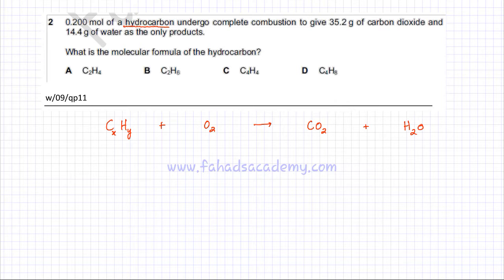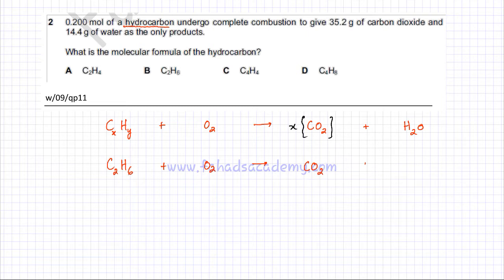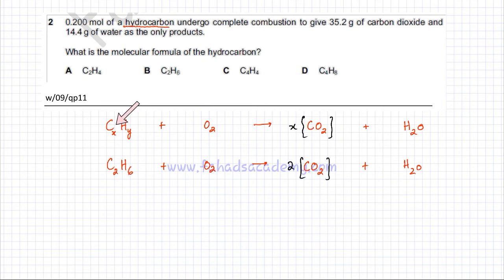Whenever you have a combustion analysis question, you need to balance the equation in terms of X and Y. If there are X carbons, there are going to be X molecules of carbon dioxide — the carbon atoms are balanced. To compare with an actual hydrocarbon, let's use C2H6 reacting with O2. If there are two carbons, there are two carbon dioxide molecules on the other side, so if you have X carbons there are X carbon dioxide molecules.